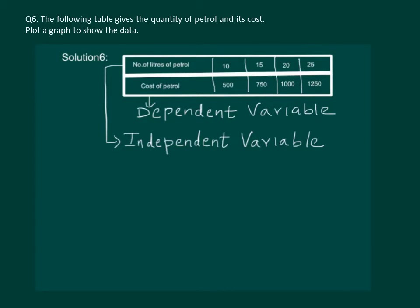Let us take another example to explain independent and dependent variables. We all know that the amount of electricity bill depends on the quantity of electricity used. We say that the quantity of electricity is an independent variable, while the amount of electricity bill is the dependent variable.